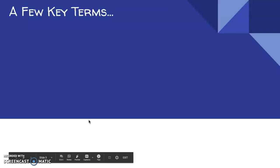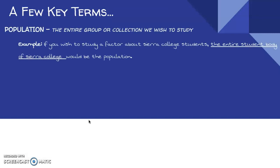Here are a few key terms. Population - we're always going to be referring to the population in this class. It is the entire group or collection we wish to study. So if we wish to study some factor about Sierra College students, say their average height or average age, then the entire student body of Sierra College, every single student who's enrolled, would be considered the population.